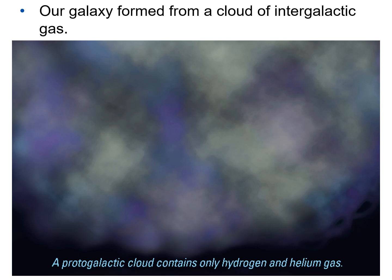Our galaxy formed from a cloud of intergalactic gas. Early in the universe, before there were any galaxies, there was a whole lot of gas out there — a protogalactic cloud. Just as you've learned about protostellar clouds for star formation, this is a protogalactic cloud: a very large cloud of gas from which a galaxy would eventually form. A protogalactic cloud contains only hydrogen and helium gas.